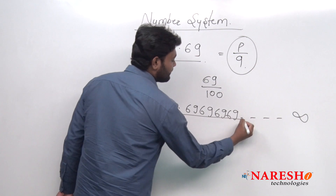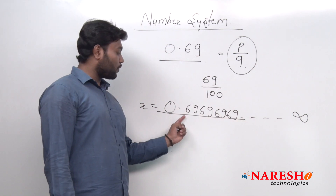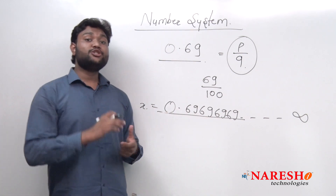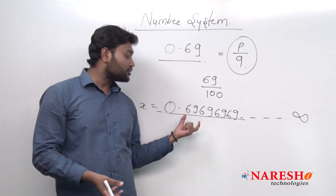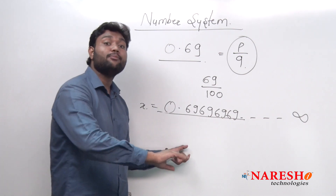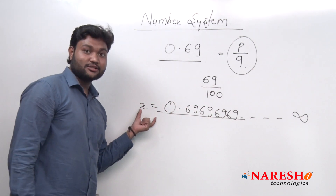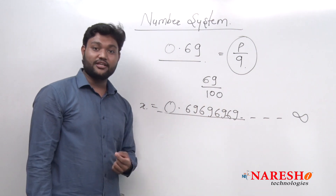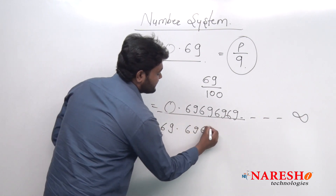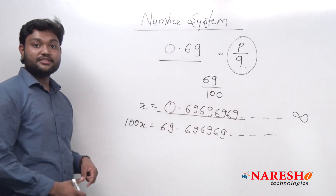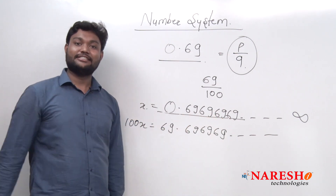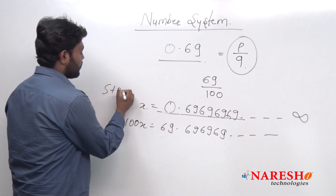First of all, denote this complete number as x. Now, we are having x equals 0.69696969 up to infinite number of times. Then we have to multiply this x in such a way that after getting the multiplication, after the decimal point, the numbers should be the same. So x equals 0.6969696969 up to infinite time. Then I will multiply this x by 100. So 100x equals 69.6969696969 up to infinite number of times. Here you could see that after the decimal point, all numbers are the same. This is step number one.